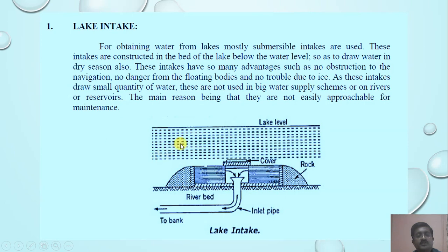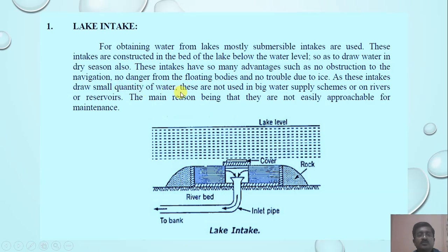This figure shows the lake intake. For obtaining water from lakes, mostly submersible intakes are used. These intakes are constructed in the beds of the lake below the water level so as to draw water even in the dry season. These intakes have advantages such as no obstruction to navigation, no danger from floating bodies, and no trouble due to ice. As these intakes draw small quantities of water, they are not used in big water supply schemes, on rivers, or on reservoirs.